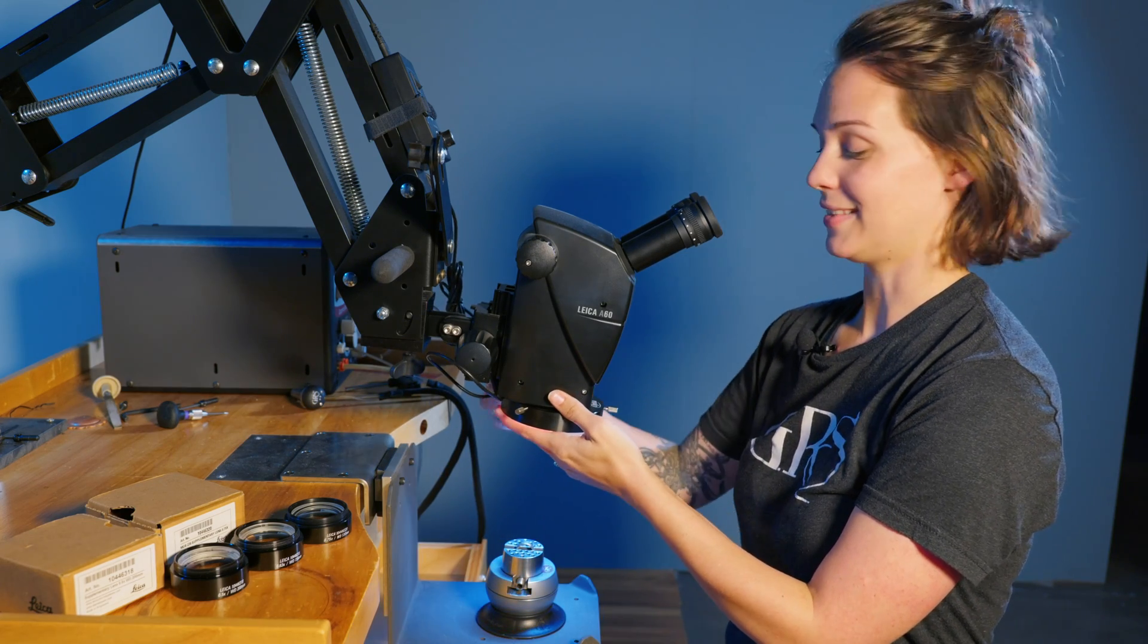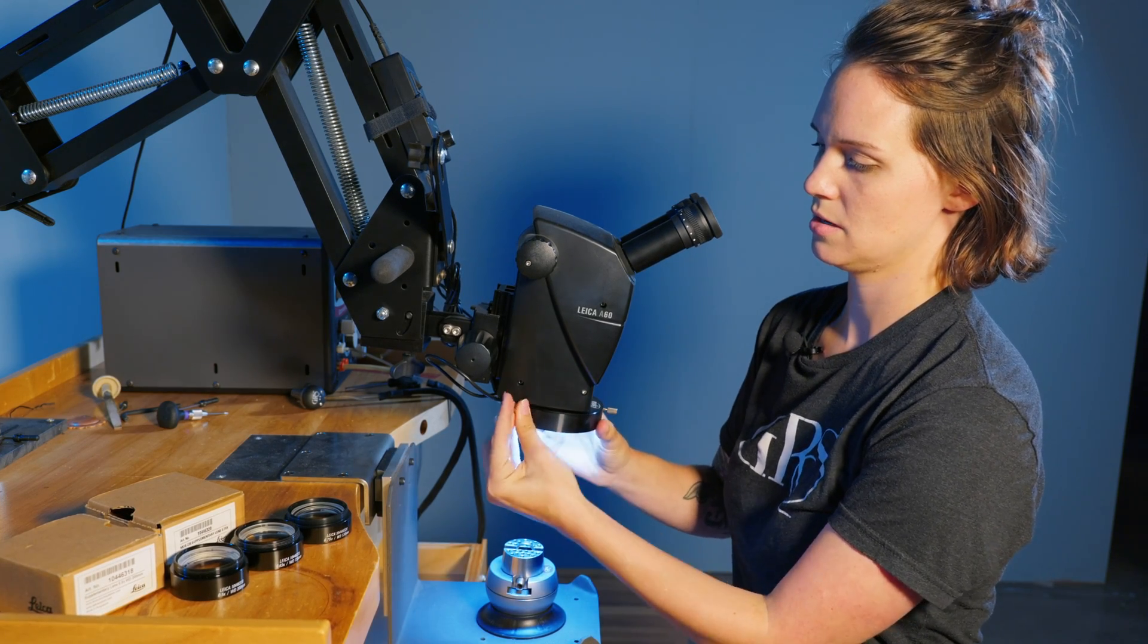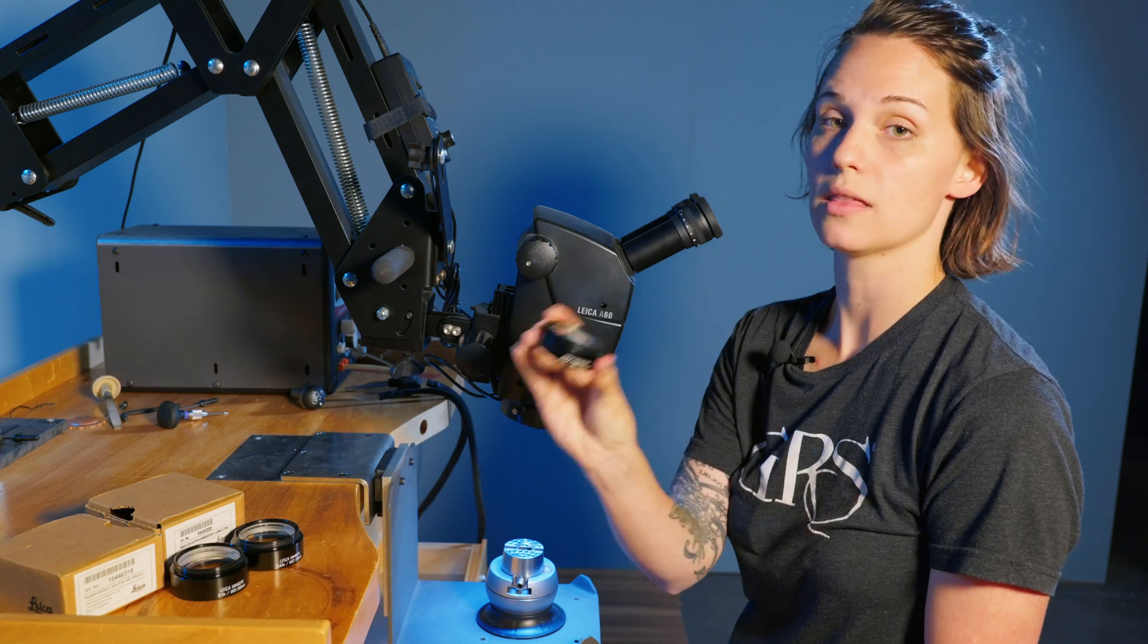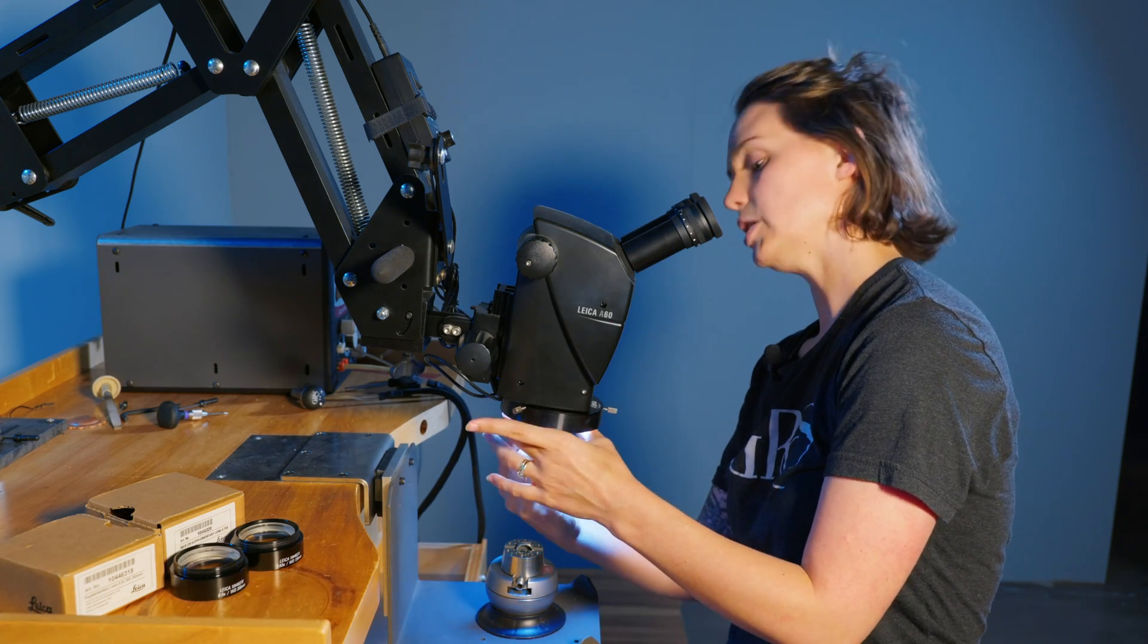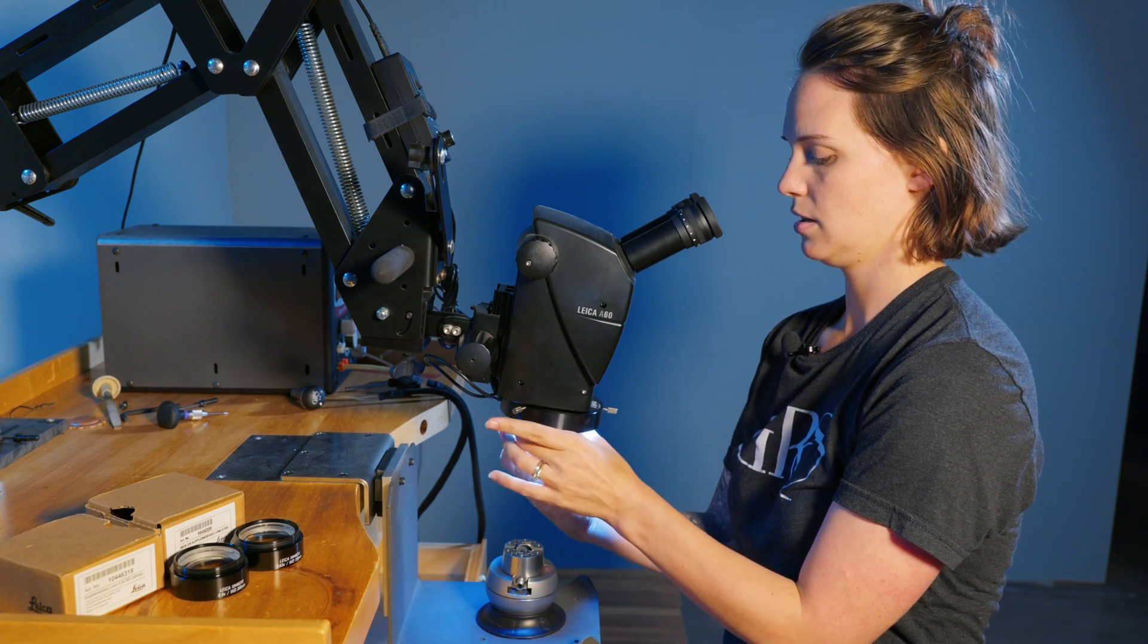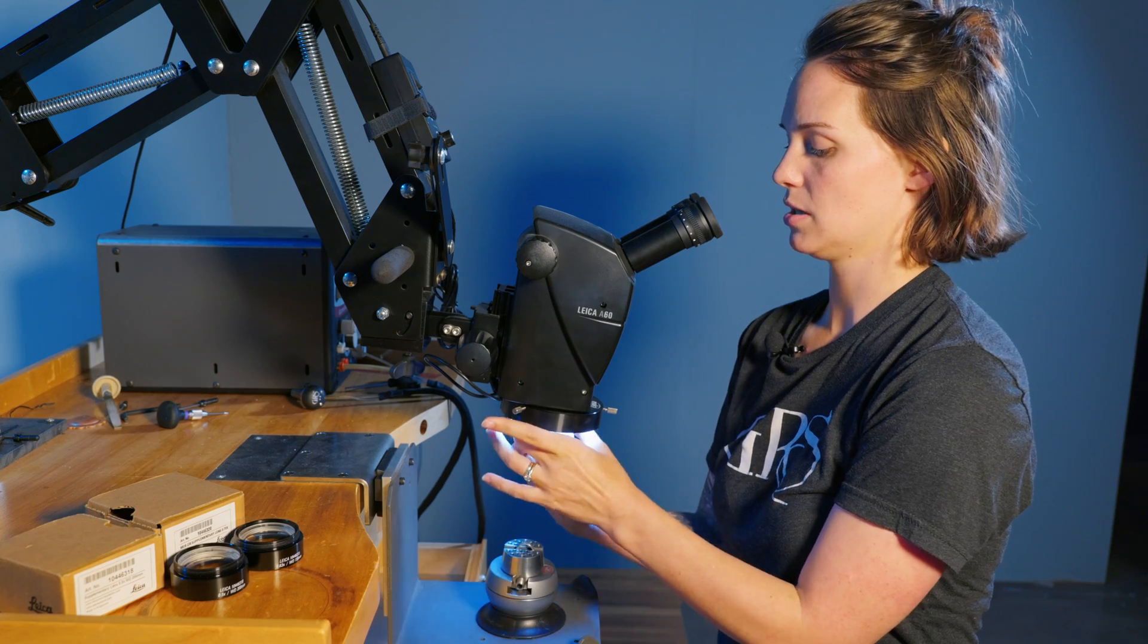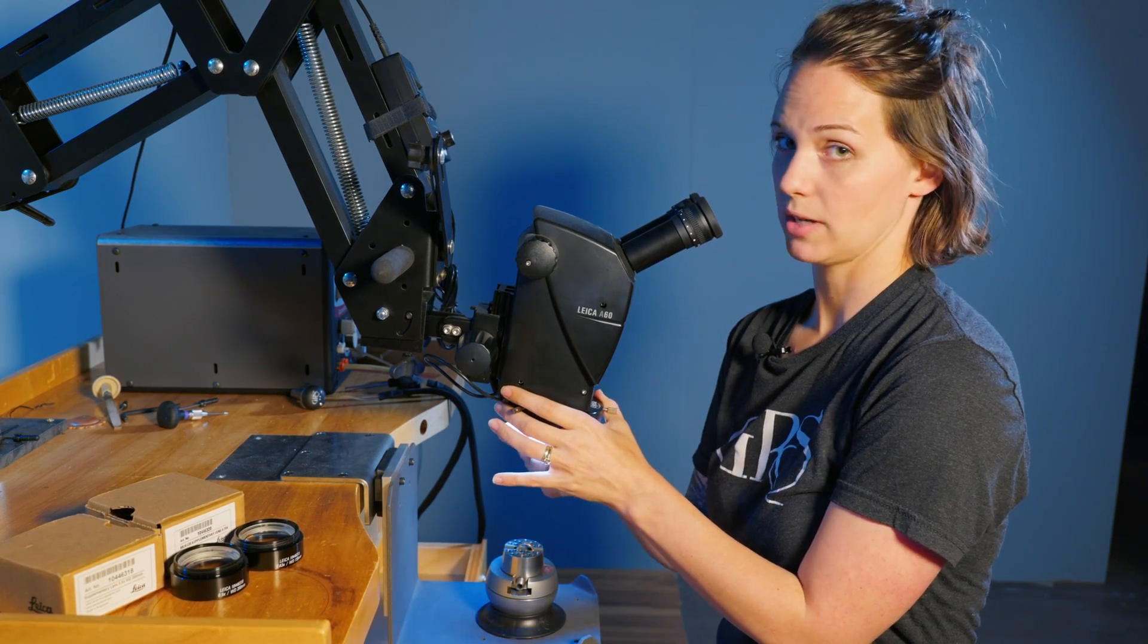Once you put that on there, we can attach our auxiliary lens. We're going to start with the 0.75. This one is going to have the smallest working distance but it's also going to have the most power or the highest magnification.